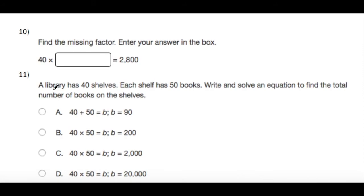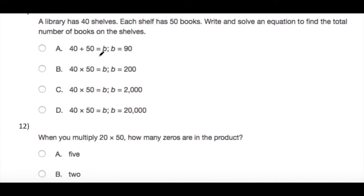Find the missing factor. Enter your answer in the box: 40 times blank equals 2,800. Here we have one zero, so one zero here. Neglecting the other one, you have 28 and you have 4. 4 times what equals 28? Yes, of course, 4 times 7 equals 28. If you put here two zeros, it means you have here one zero and you have here one zero, it means you have here also one zero, so it will be 70.